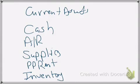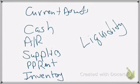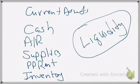We do list these in the order of liquidity, meaning the order in which they expect to be converted into cash. The items that are the most liquid are cash and cash equivalents. Then we go to short-term investments, accounts receivable, inventory, and then those prepaid items. Those would be listed in order of liquidity — that is the rule of thumb for how we list our current assets on our balance sheet.